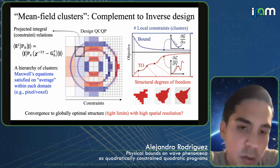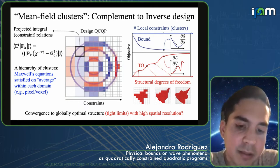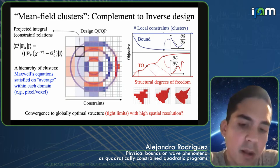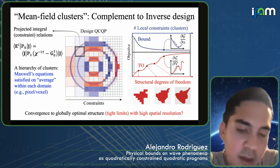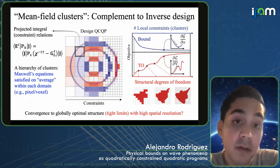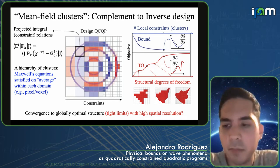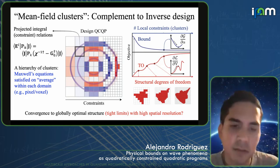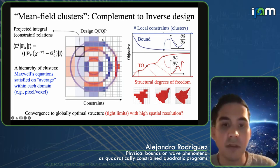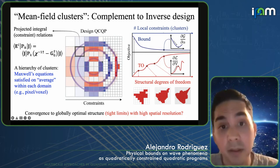It turns out it's equivalent to showing that if you're tackling these QCQP problems using dual Lagrange methods, you get strong duality. It's not surprising that this is a challenge to show.